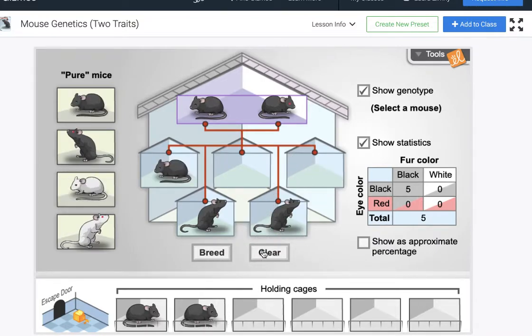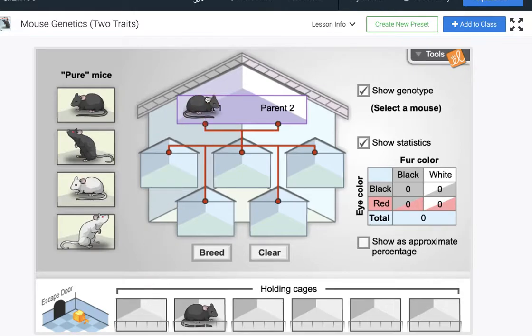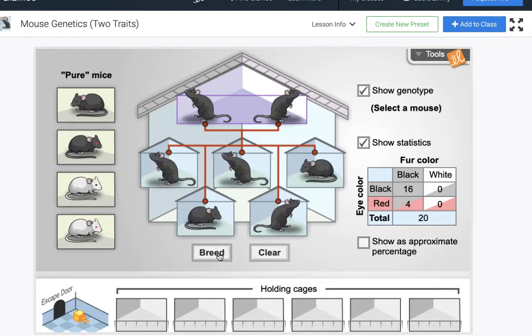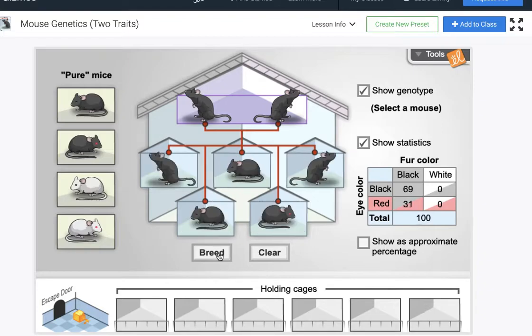Let's take a look at then what we would have when we breed these two offspring. Okay our prediction should be that no matter what the fur color should be black but we should be seeing the red eye color actually pop up in some of the population. So let's breed these guys a hundred times.